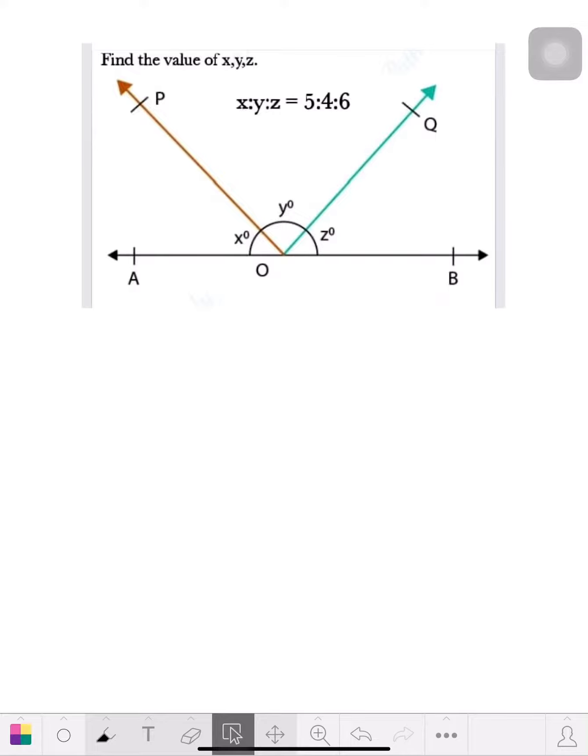So what you really have to do is take the 5, let's get this pen going. So the 5, 4, and the 6, what do they add to? Let's see, 15. You know the whole thing is 180 degrees, so let's see how much each one of these units is worth.